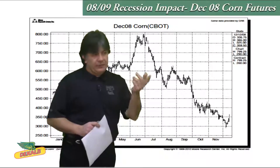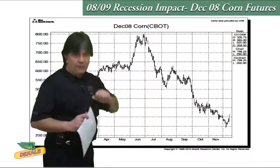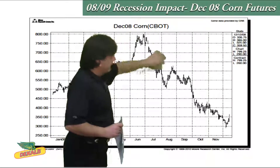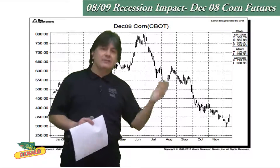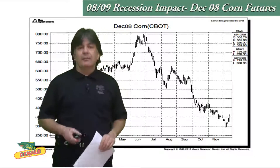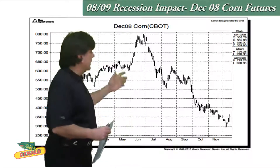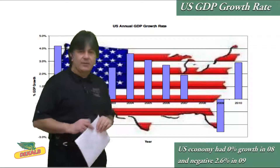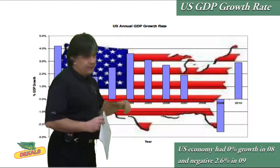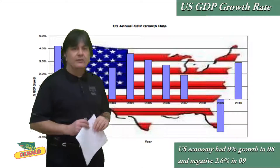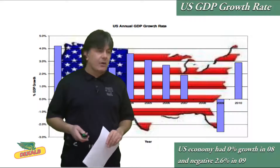You can see in 2008, in this chart here, this is the December corn futures chart — see that elevator down? That was demand destruction because of that 2008-2009 recession. It actually happened because of the United States. The United States had 0% growth in 2008 and about minus 2.6% in 2009, due to that financial subprime mortgage crisis.